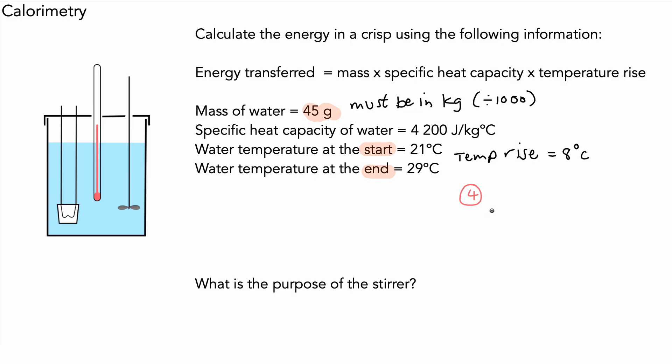This one could be worth nearer four marks because there's more work to do. We use our values of 0.045 for the mass of the water times 4200 for the specific heat capacity and 8 degrees C for the temperature rise. Multiply that out and we have 1512 joules. One mark for changing the units, working out the temperature rise, putting the numbers in the equation, and getting the answer.